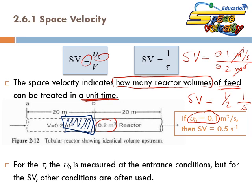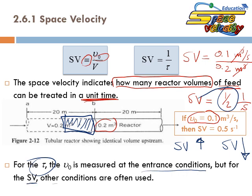What do you prefer — large or small space velocity? Obviously you want to process many reactor volumes per unit time. If you process a lot of reactor volumes of fluid per unit time, your production rate is high. You want to treat maybe 3, 5, or 10 reactor volumes per second — if you can maintain your conversion. For space time, ε₀ is measured at entrance conditions, but for space velocity, other conditions are often used.